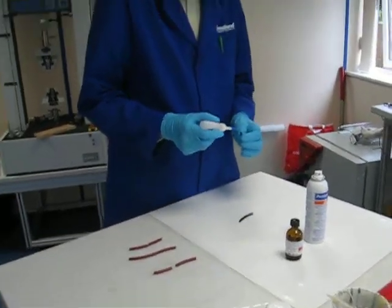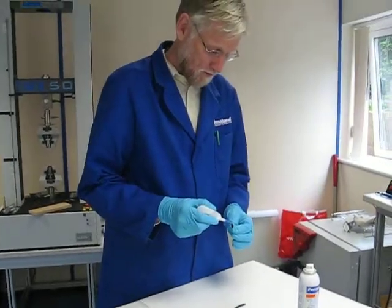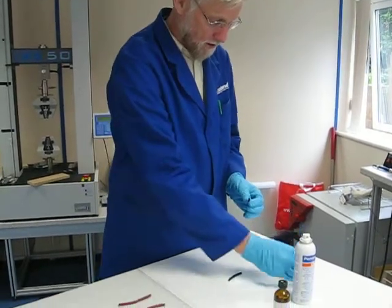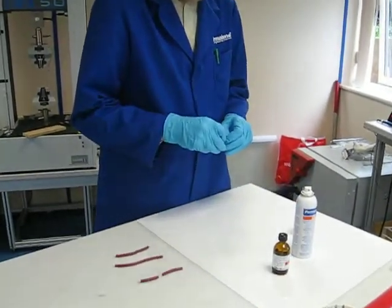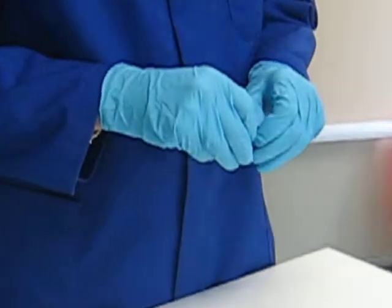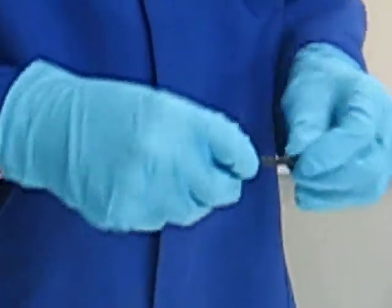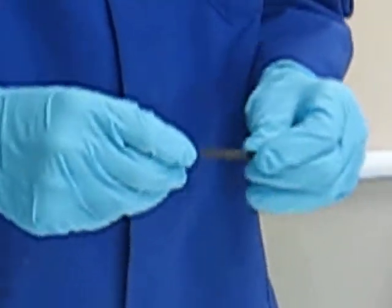Many rubbers such as neoprene and nitrile rubber bond very easily with the cyanoacrylates. A single drop applied to the end of the component, put together, and you get an instant join which is very high strength.